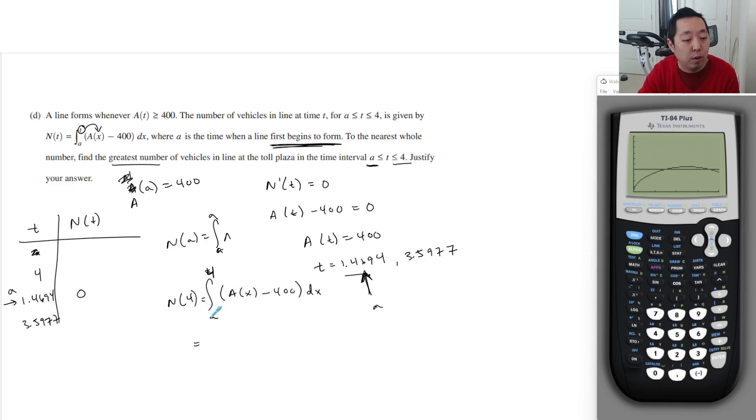And then, now, when I want to do N(4), I'm going to integrate from 1.4694 of this function. That's what I should be doing. From 1.4694 up to 4 of Y1 minus 400. Sorry, I kind of butchered that explanation. But hopefully, that makes sense. I want to be clear. I'm trying to minimize the amount of mistakes I make. 62.338. And then, let's do the same integral. But now, we're going to evaluate it at, instead of 4, we're going to do it at the other critical point. And it should be this other critical point, by the way. This 3.5977. That is 71.25.